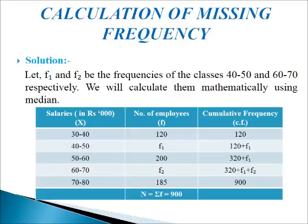We add up the frequencies: in the first row we write 120; in the second row, 120 plus F1 as the frequency is missing; in the third row, 320 plus F1, since 200 plus 120 equals 320; in the fourth row, 320 plus F1 plus F2 as that frequency is also missing; and in the last row, we write 900, which is already given in the question.